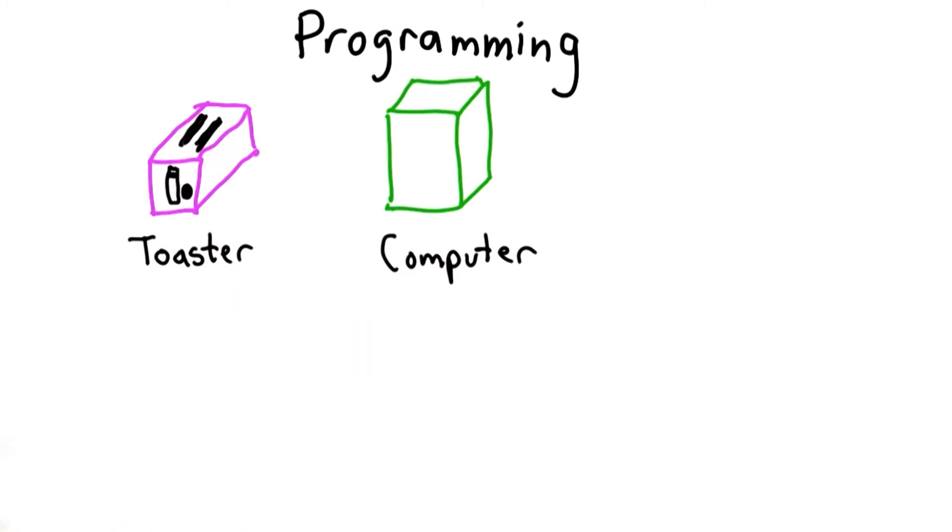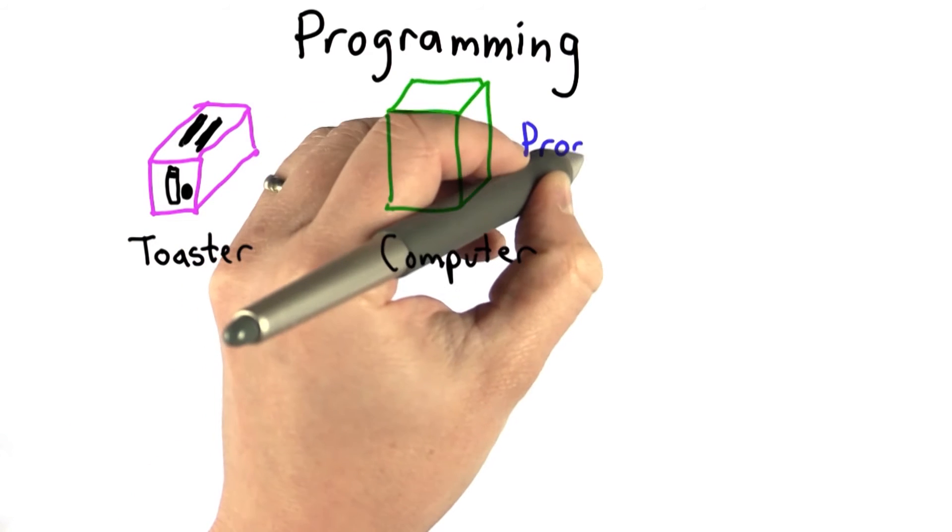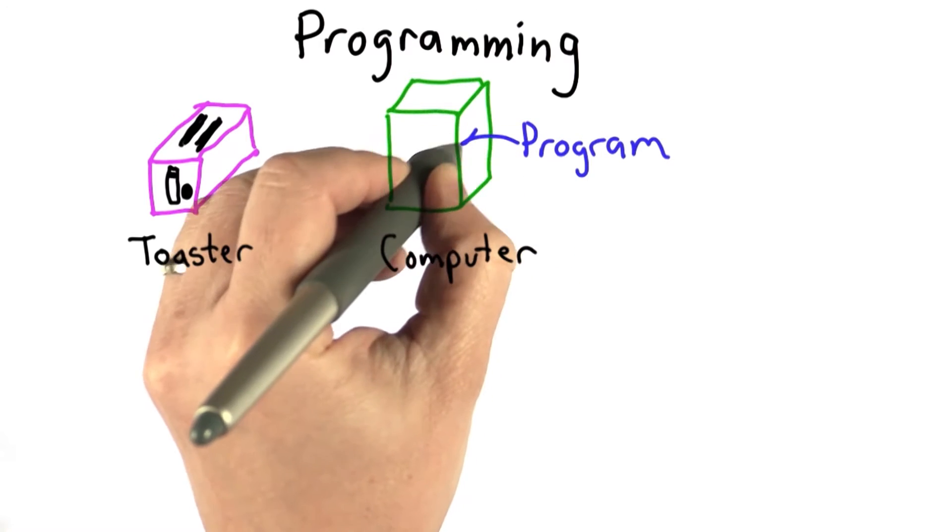The power of a computer is that unlike a toaster, which is designed to only do a few things, a computer can do anything. A computer is a universal machine. We can program it to do essentially any computation.